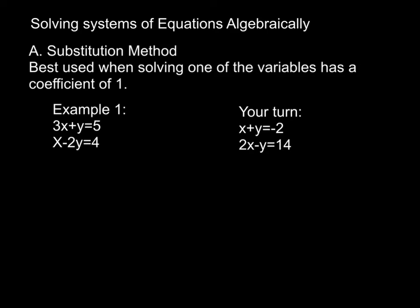We're looking at solving systems of equations with the two algebraic methods. The first method is substitution. I personally prefer substitution only when one of the coefficients of the variables is a one, so that I don't have to deal with fractions. If we look at my two equations here, we have 3x plus 1y equals 5 and we have 1x minus 2y equals 4.